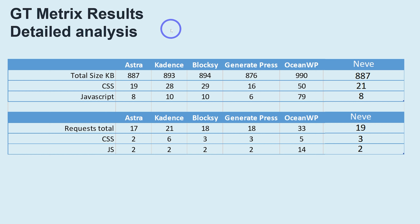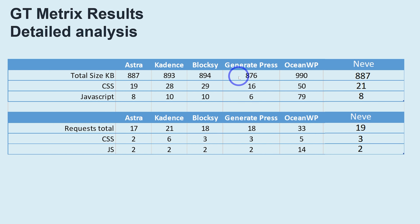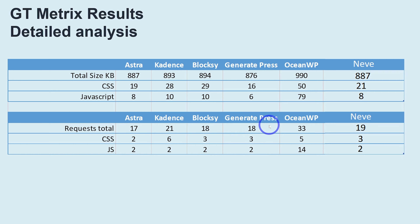On GT Metrics, Neve is the equal winner alongside GeneratePress, so excellent performance. Looking at more detailed analysis, Neve's total page size is 887 kilobytes — basically the same as the others; GeneratePress is very slightly lighter with slightly less CSS. In terms of server requests, Neve makes 19, while GeneratePress, Blocksy, and Astra are slightly lighter. You can say Neve is on par with any other high-performance theme.